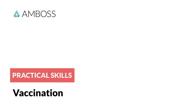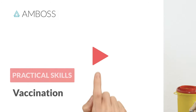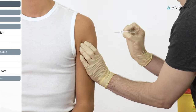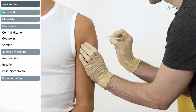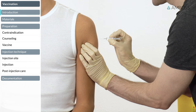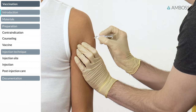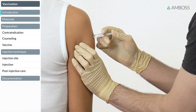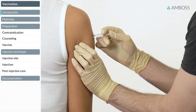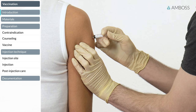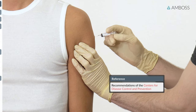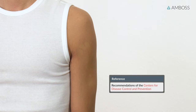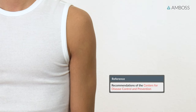Welcome to the AMBOSS tutorial on administering vaccines. In this video, we'll be using the standard vaccination technique, which is intramuscular injection into the deltoid muscle. This technique is used when injecting almost all vaccines from childhood onward. We'll be referring to the recommendations of the Centers for Disease Control and Prevention.